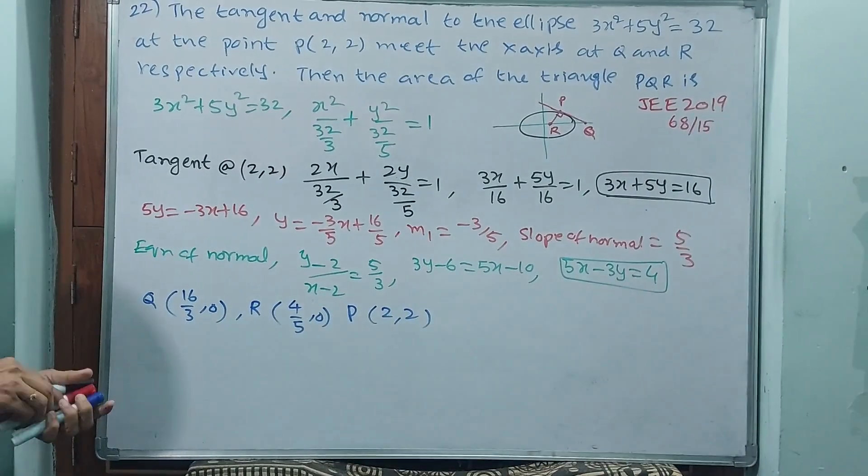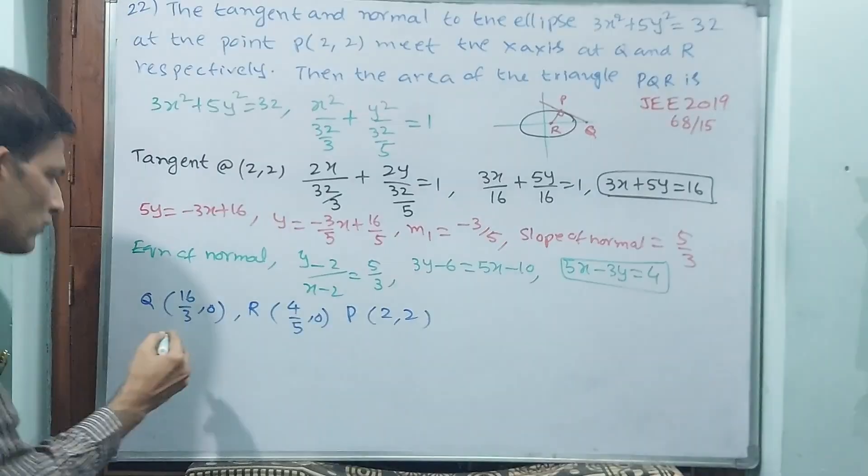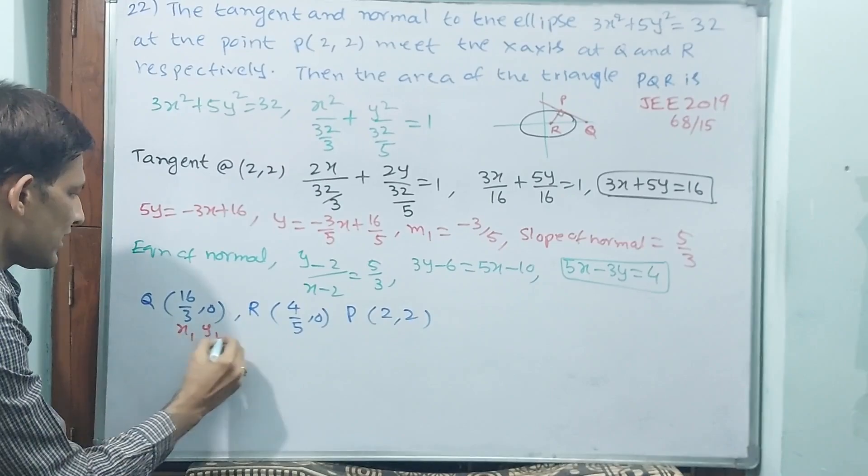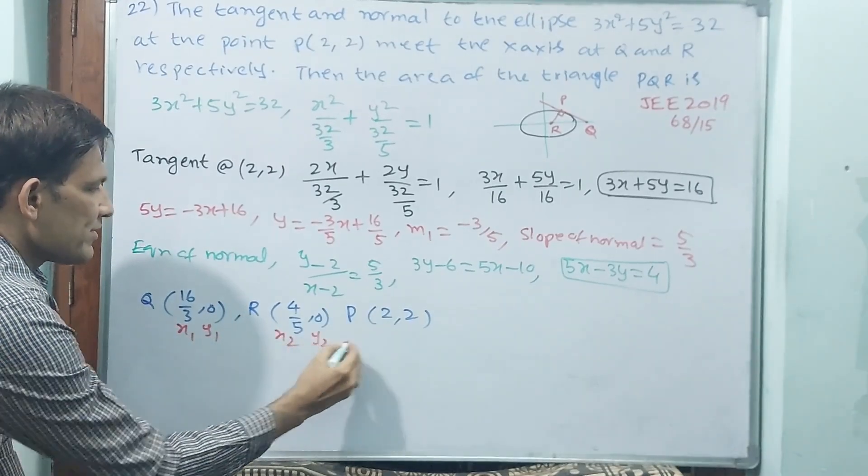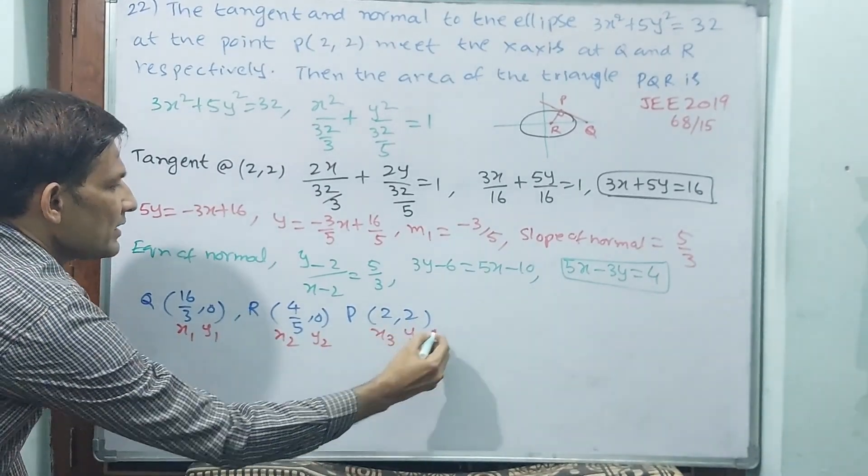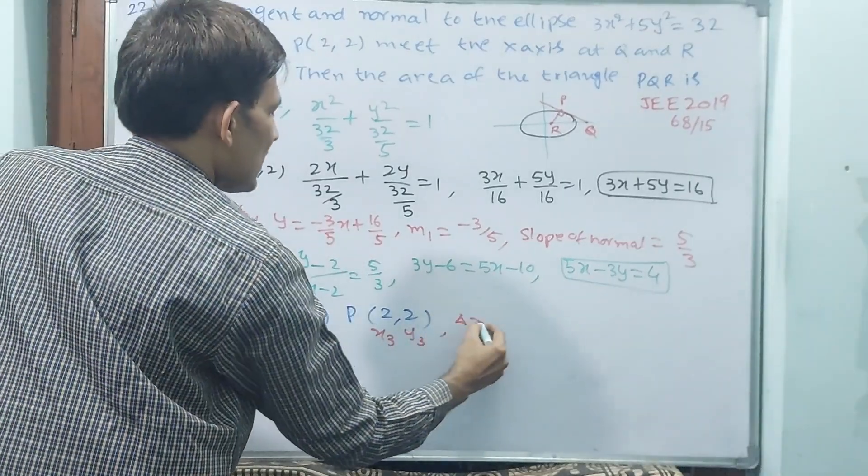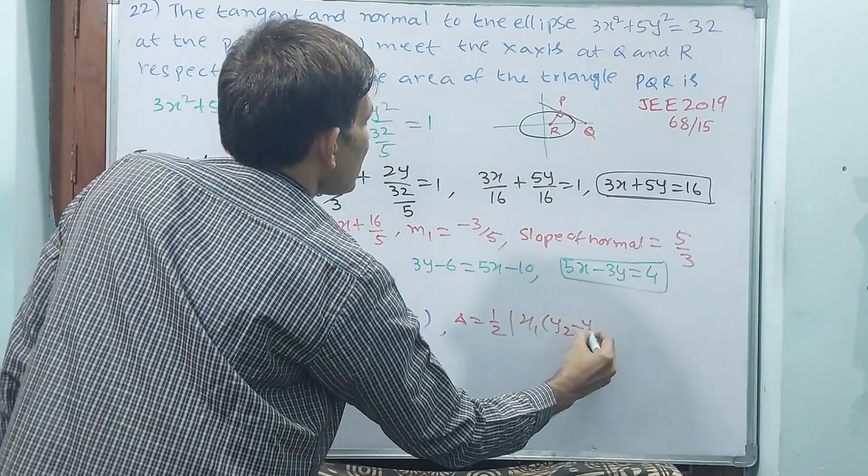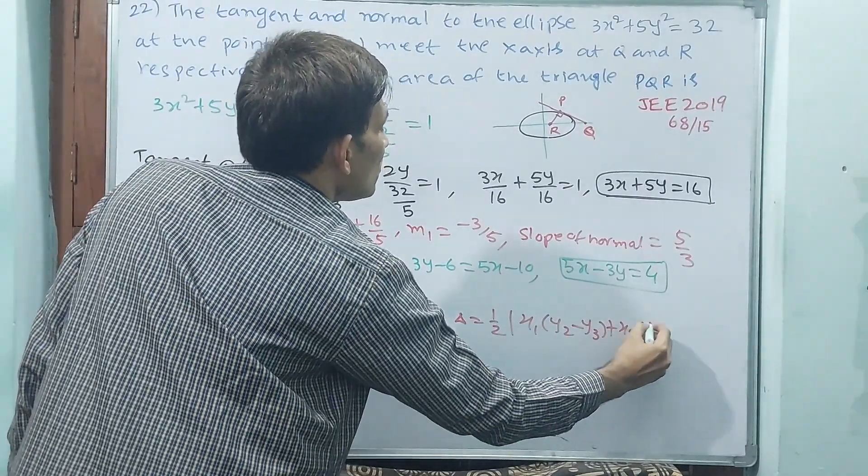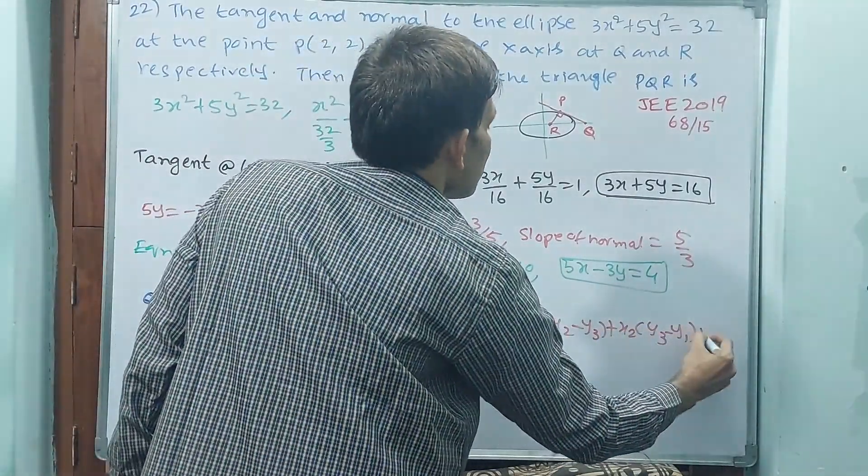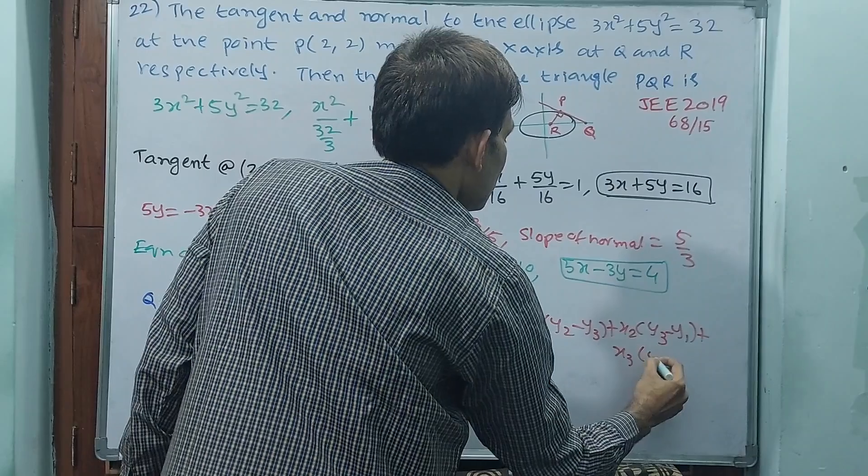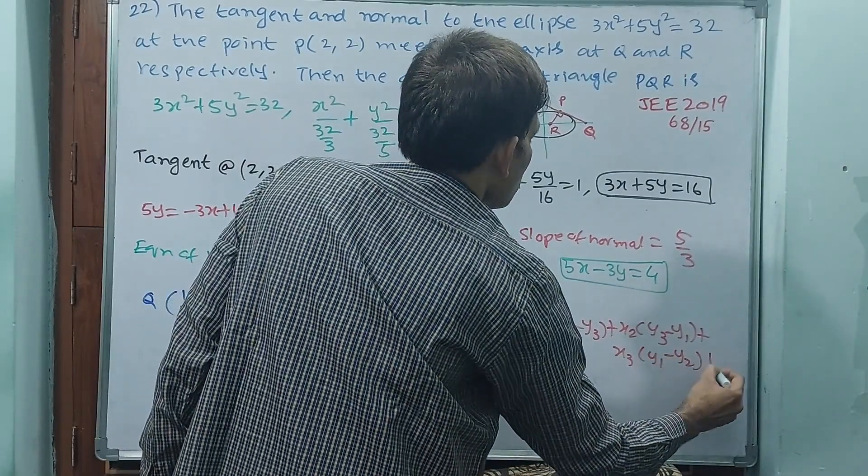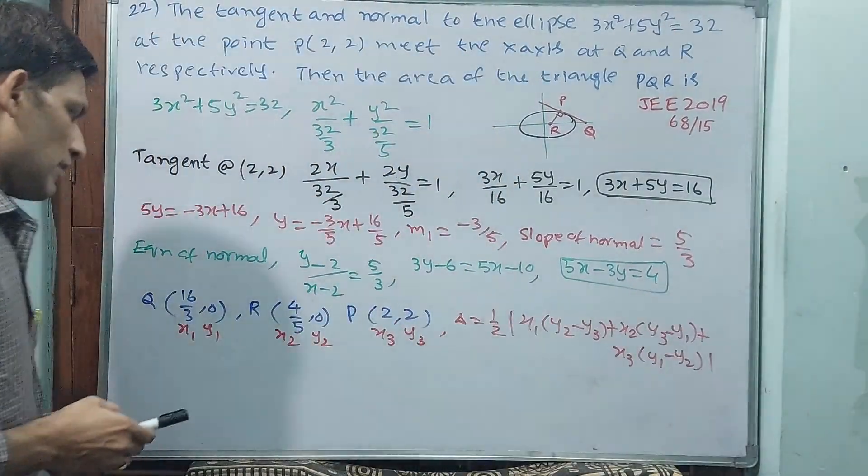Find out notations also. x1 y1, x2 y2, x3 y3. You have to find the area. Delta equal to half modulus x1(y2 minus y3) plus x2(y3 minus y1) plus x3(y1 minus y2). That is the formula.